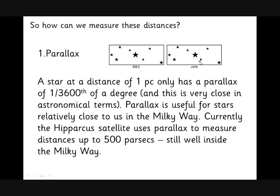So that's parallax - 1/3600th of a degree. You look in December, you look in June. At first glance those two pictures look the same, but at second glance you'll notice this star has just moved very slightly to the right. We have to judge how big the angle is as we look from Earth. The Hipparchus satellite has used parallax to measure distances up to 500 parsecs fairly recently, but that's still well inside the Milky Way. This is our first step in our distance ladder.